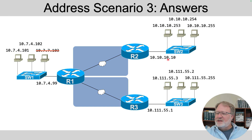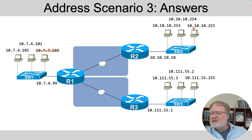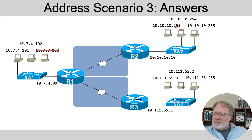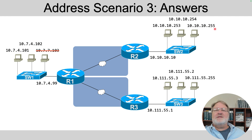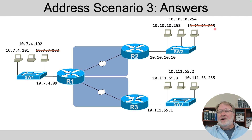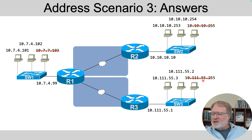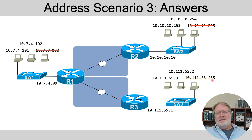On R2, the router is 10.10.10.10. Checking the PC addresses, the first three octets — 10.10.10 — all check out. The fourth octets are .10, .253, .254, and .255, which are all within the allowed range. However, the .255 address makes this the broadcast address in these simple subnets — we can't assign that to a host. Similarly, in the bottom right subnet, the incorrect address is also the subnet broadcast address.